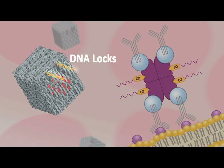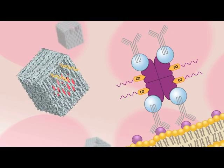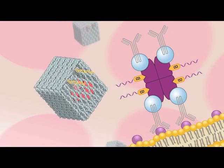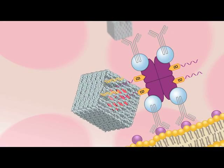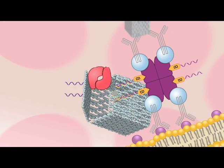We functionalize the lid of the container with a lock key system to regulate its opening. The lock consists of two DNA strands that seal the lid of the container shut. These lock strands can be displaced by more strongly binding key strands on the targeting complex, thus opening the box and releasing VEGF.